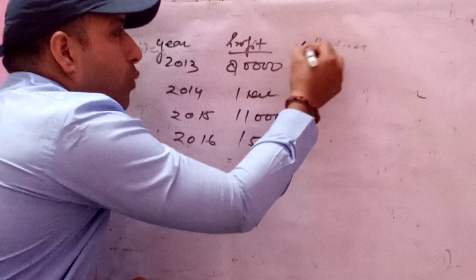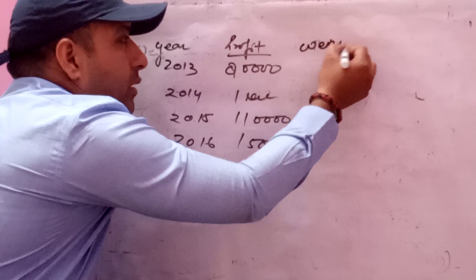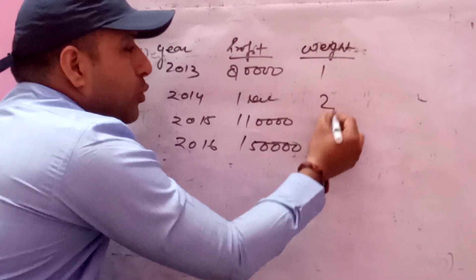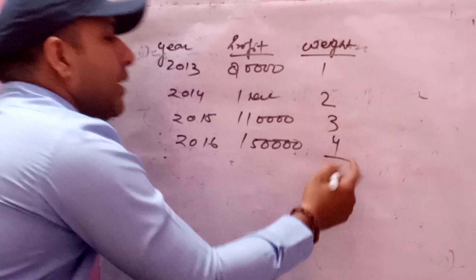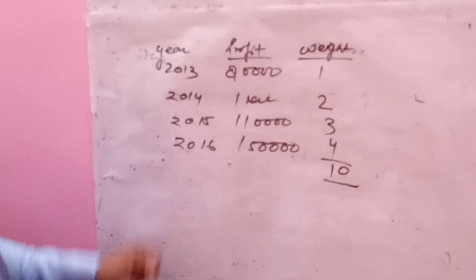So weight equals 1, 2, 3, 4. Four plus 3 is 7, plus 2 is 9, plus 1 is 10. So profit multiplied by weight equals product.